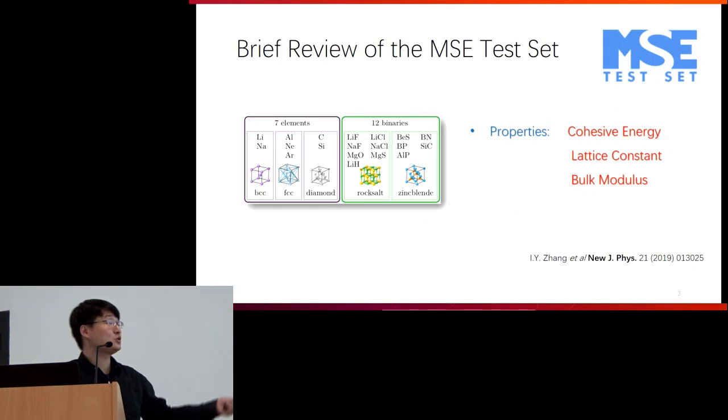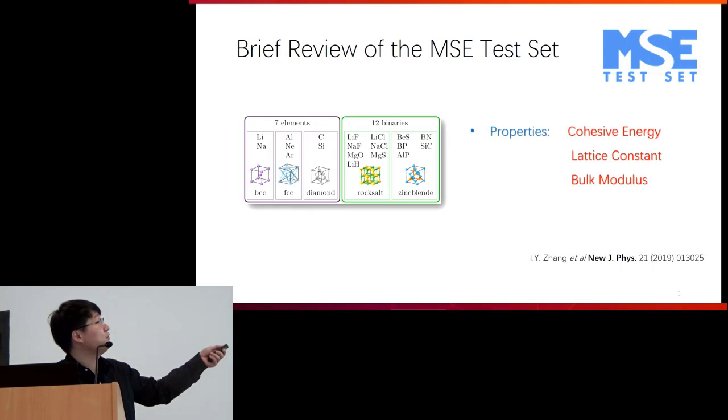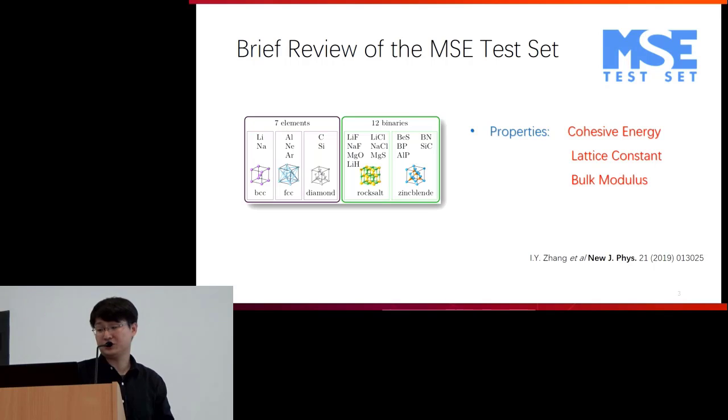Now I'll briefly review the MSE test set we established. In our test set, we have seven elements and two binaries as the first step, which represent main group crystals with cubic structures containing metallic bonds, ionic bonds, covalent bonds, and weak bonds. For reference, the properties we investigate and benchmark include cohesive energy, lattice constant, and bulk modulus.